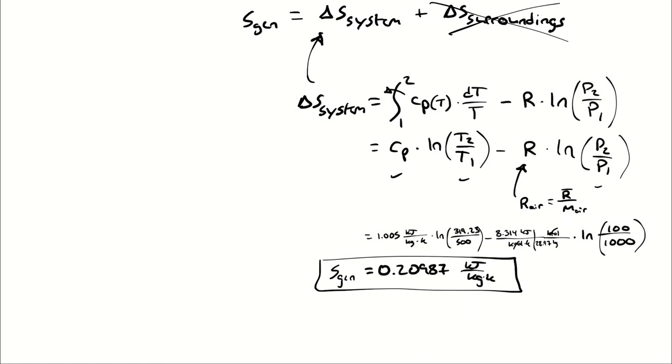Then S gen is going to increase because I am less reversible. Remember S gen is 0 if it's reversible, if it's perfect. The presence of losses is going to increase S gen. The more losses there are, the higher S gen is as a result.